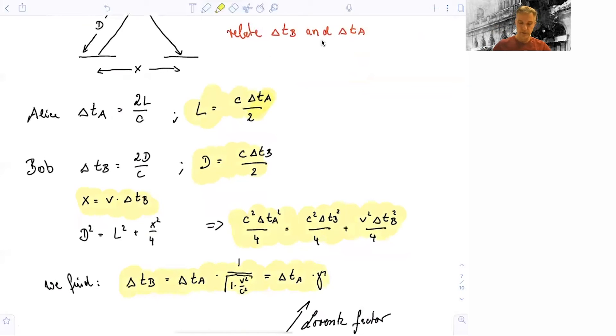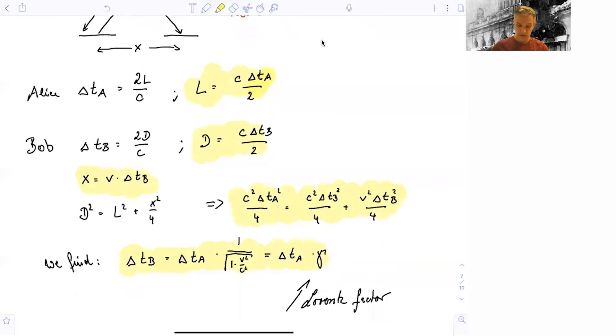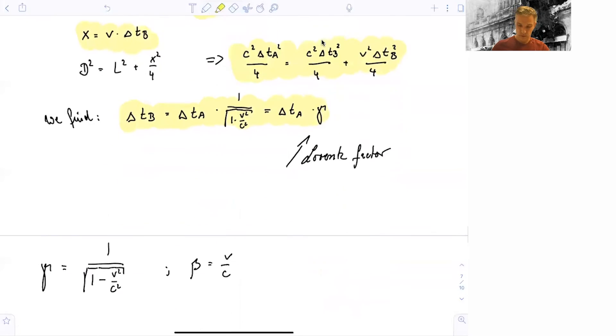And we find the relation between delta T B and delta T A, and can find that it's 1 over square root 1 minus V square over C square, which is the Lorentz factor. So we just, with a simple clock and Einstein's postulate, derived time dilation. We find that for Bob, Alice's moving clock moves slower.